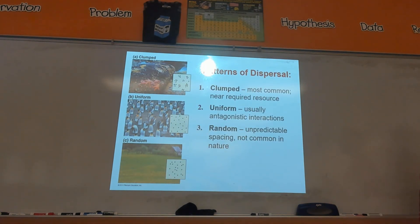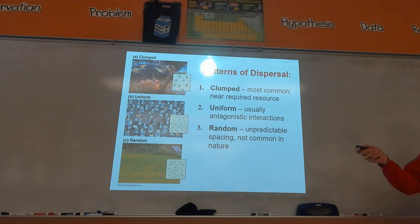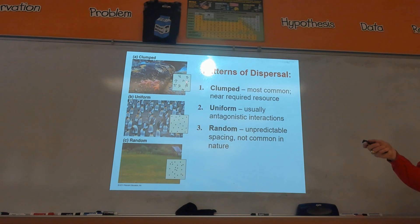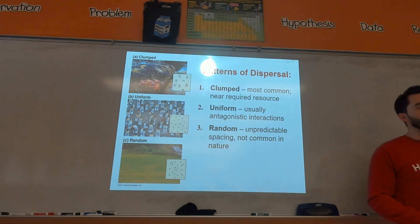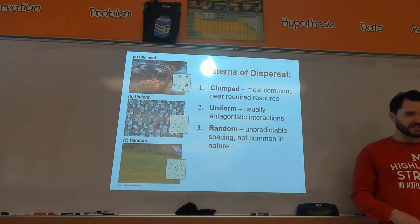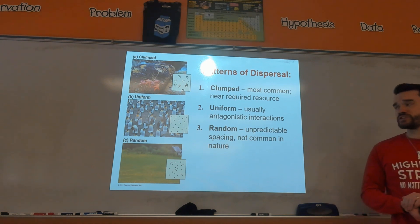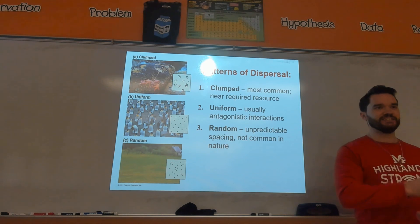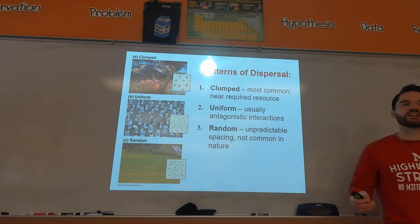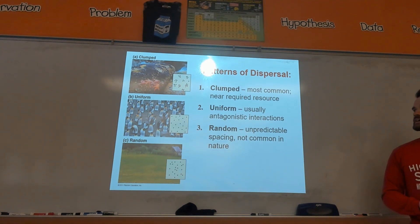There are three kinds of dispersion you'll see in nature. The most common is clumped — exactly what it sounds like: clusters of organisms that group around each other. The reason they do that is because they're clustering around a resource they need to survive. For example, for humans looking at ancient civilization, the most common resource we would clump around would be something like rivers — a source of water.